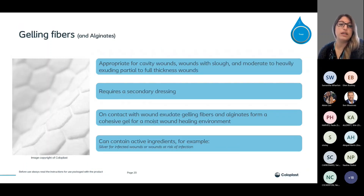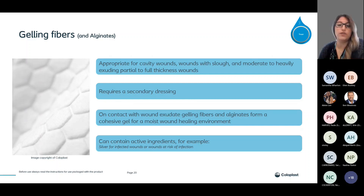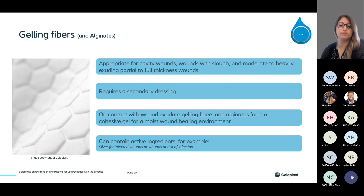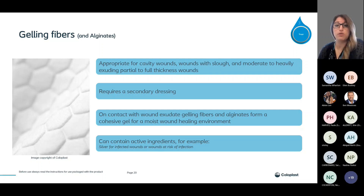Gelling fibers and alginates are appropriate for cavity wounds, wounds with slough, and moderate to heavily exuding partial to full thickness wounds. They always require a secondary dressing to keep them in place. On contact with wound exudate, gelling fibers and alginates form a cohesive gel for a moist wound healing environment. They may contain active ingredients such as silver for infected wounds or wounds at risk. These are what you would use for wounds greater than two centimeters in depth to pack the wound, using a foam dressing as the secondary to keep the filler in place.